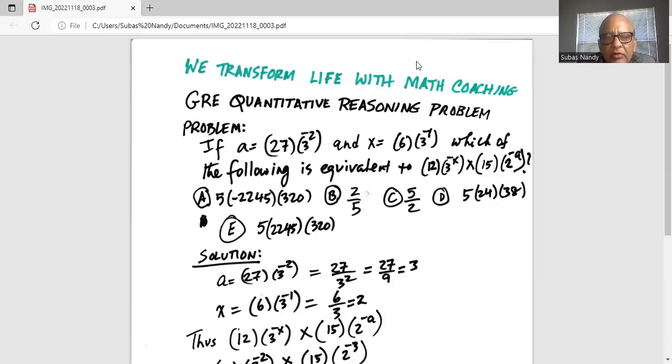Problem: If a is equal to 27 multiplied by 3 to the power of minus 2, and x equals 6 multiplied by 3 to the power of minus 1, which of the following is equivalent to 12 multiplied by 3 to the power of minus x, and that whole thing is multiplied by 15 times 2 to the power of minus a?